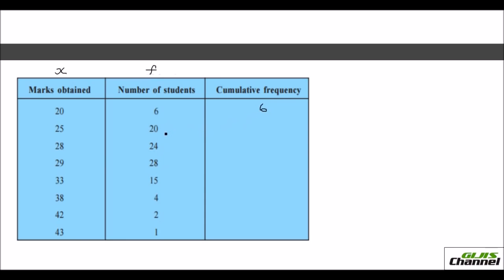Initially it is 6. Then you add 6 plus 20, this 20, so that will give you 26. Then you will add 26 plus 24, so that will give you 50. Next step is 50 plus 28, so that is 78. Then you have 78 plus 15, it will give you 93. Next is 93 plus 4, 97. 97 plus 2, 99. And finally you have 99 plus 1, and that gives you 100.